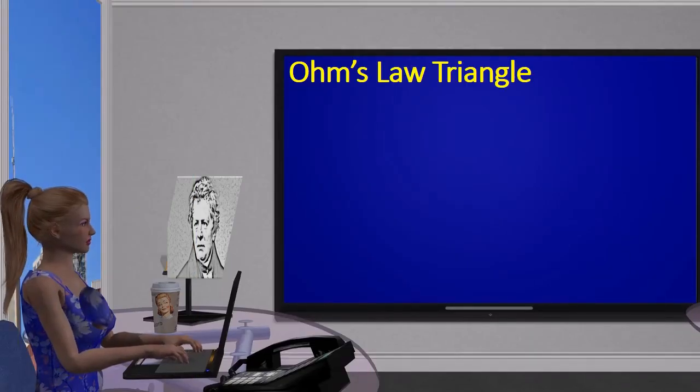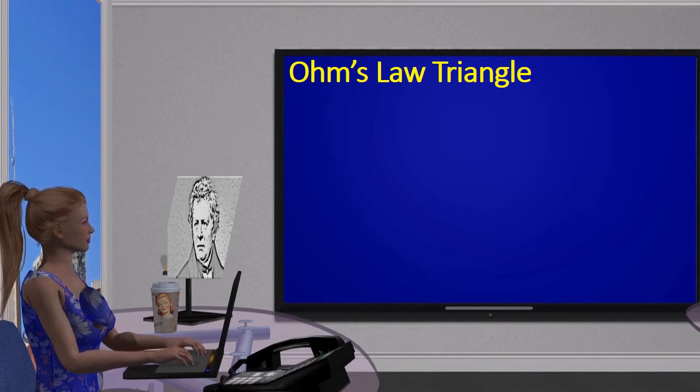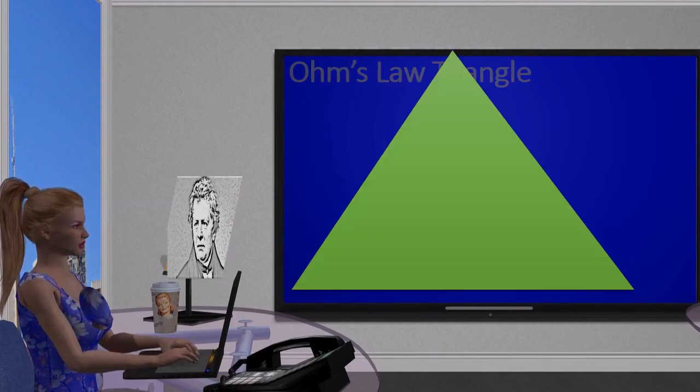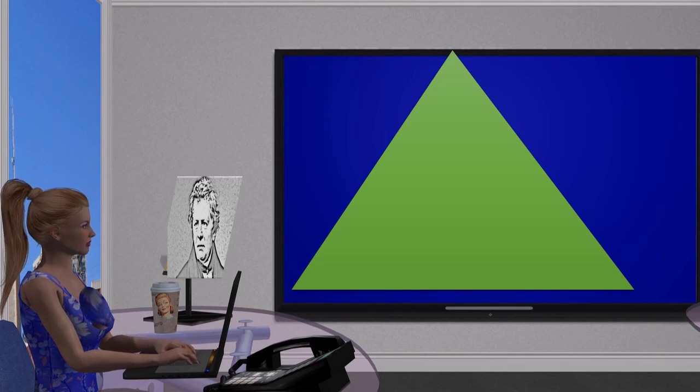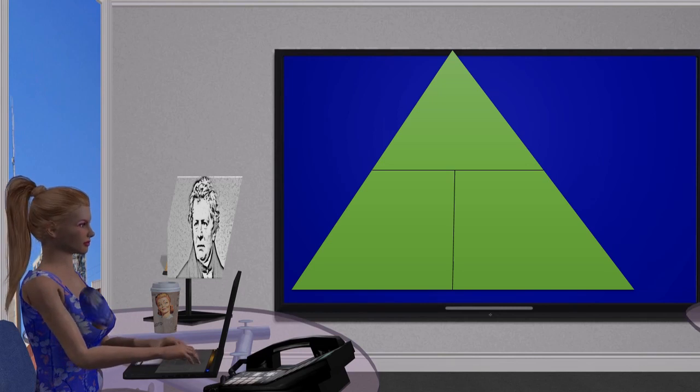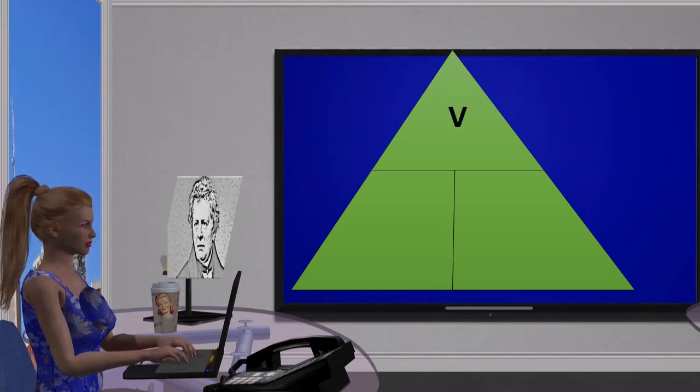If you are unable to remember the different forms of Ohm's Law, then this magical triangle makes your job easier. Create a triangle and divide it into three parts like this. The voltage at the top of the triangle is described as V, the current on the left side is represented as I, and the resistance on the right side of the triangle is described as R.